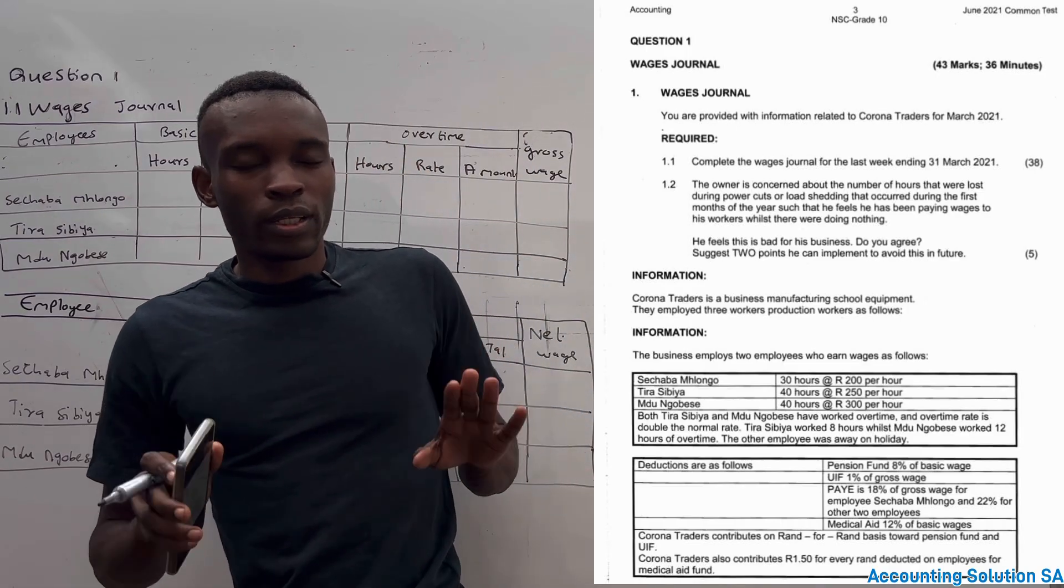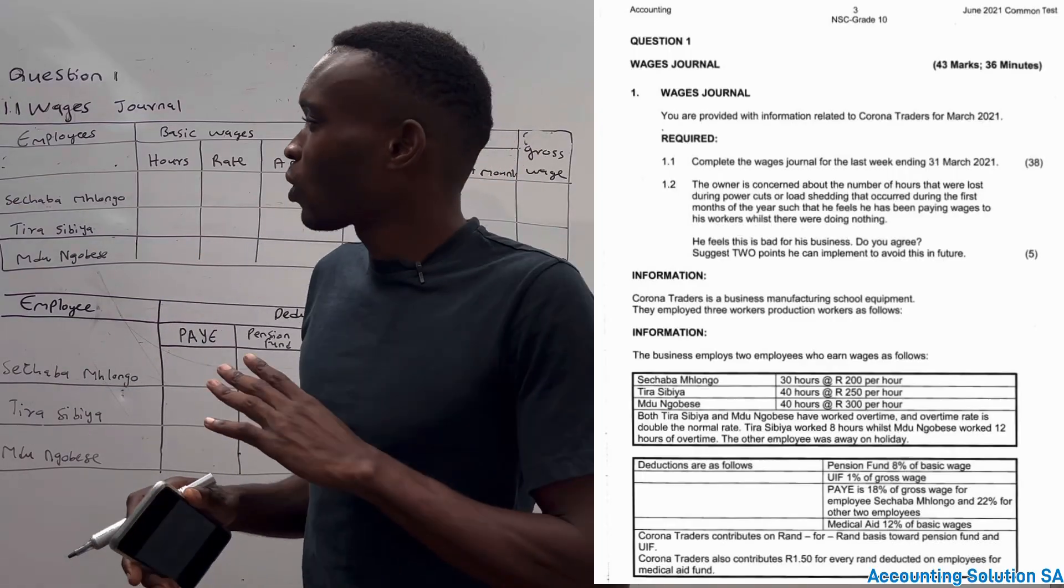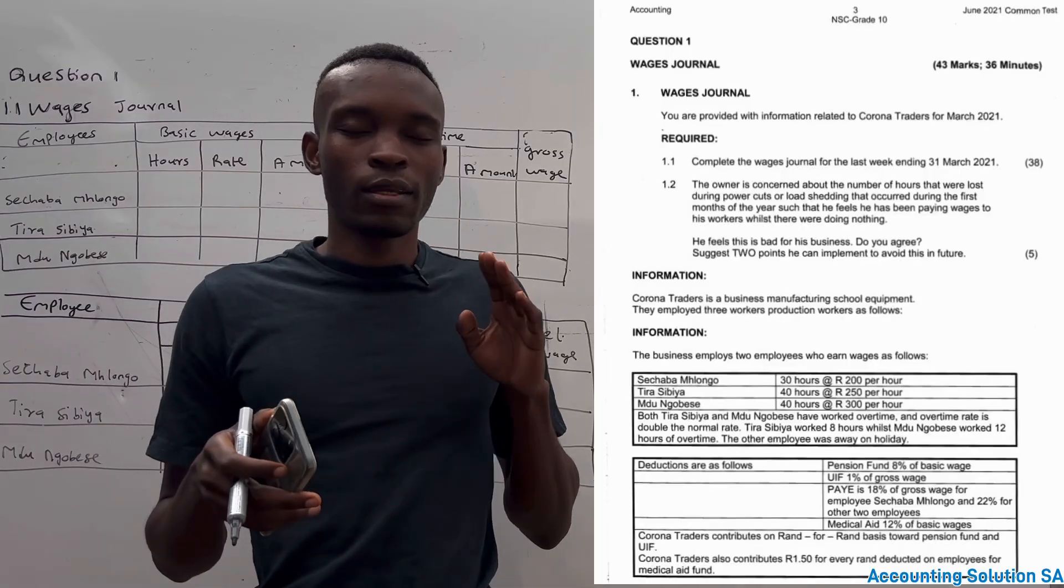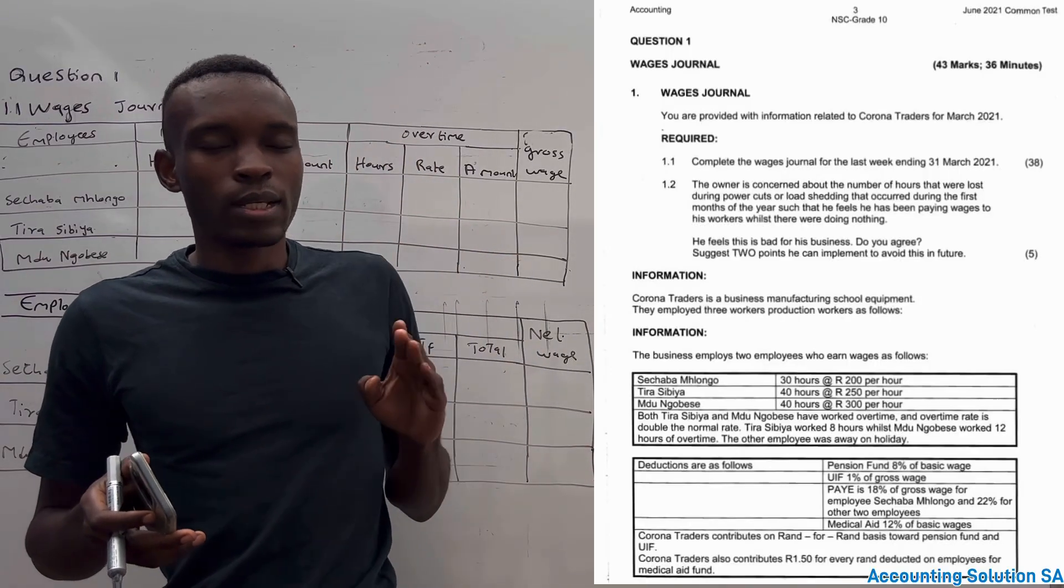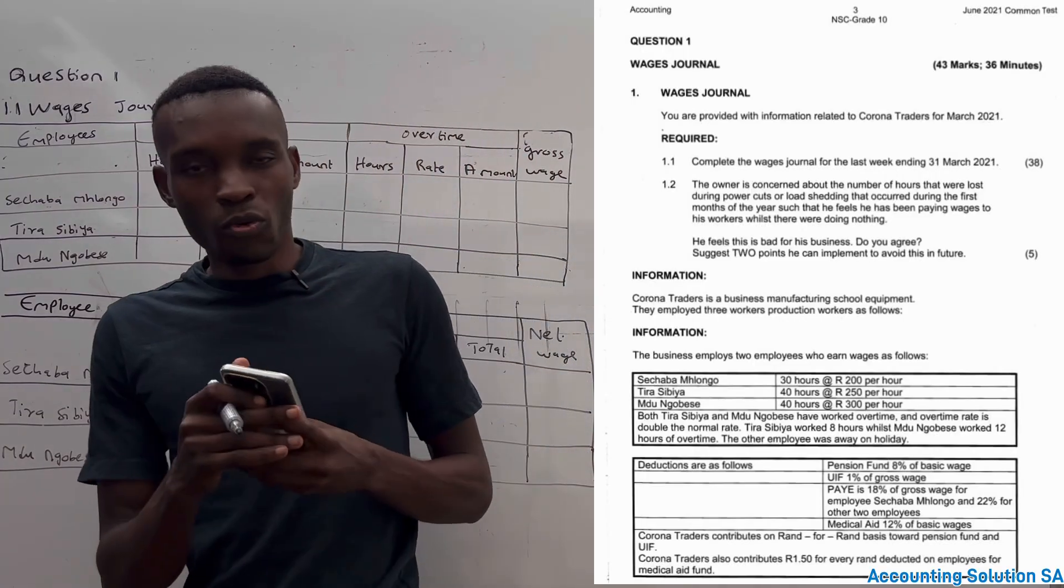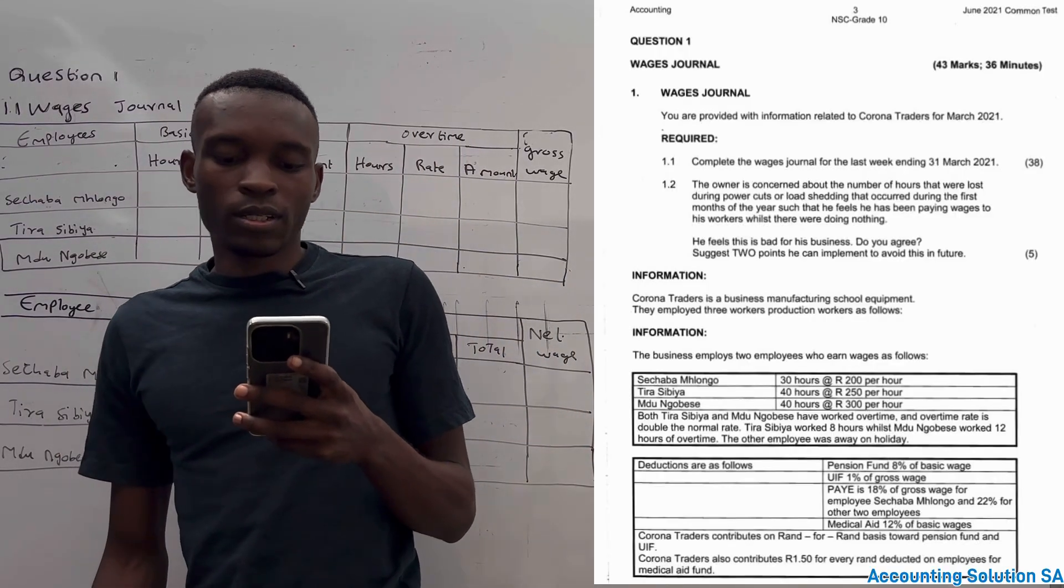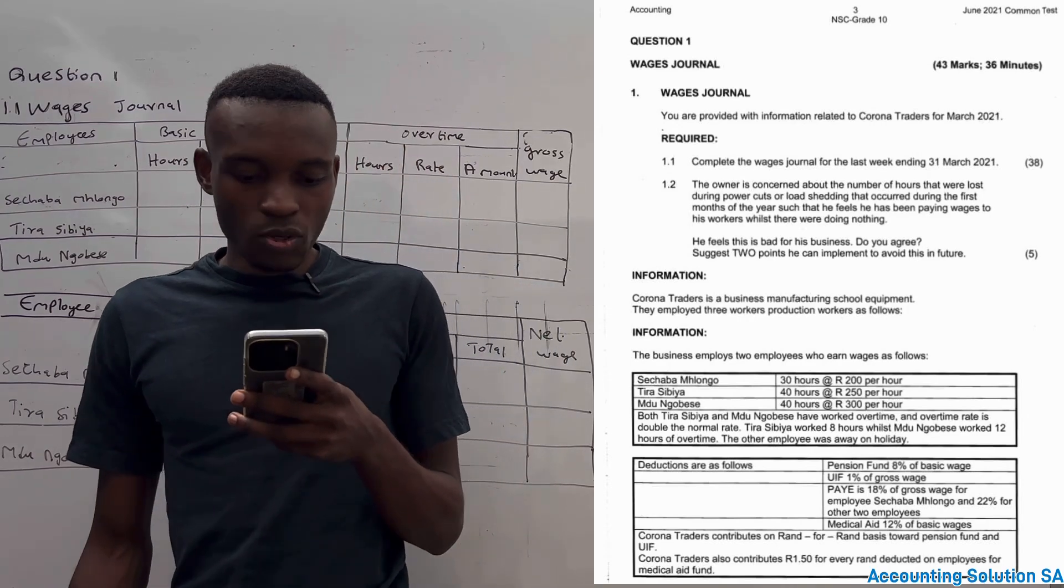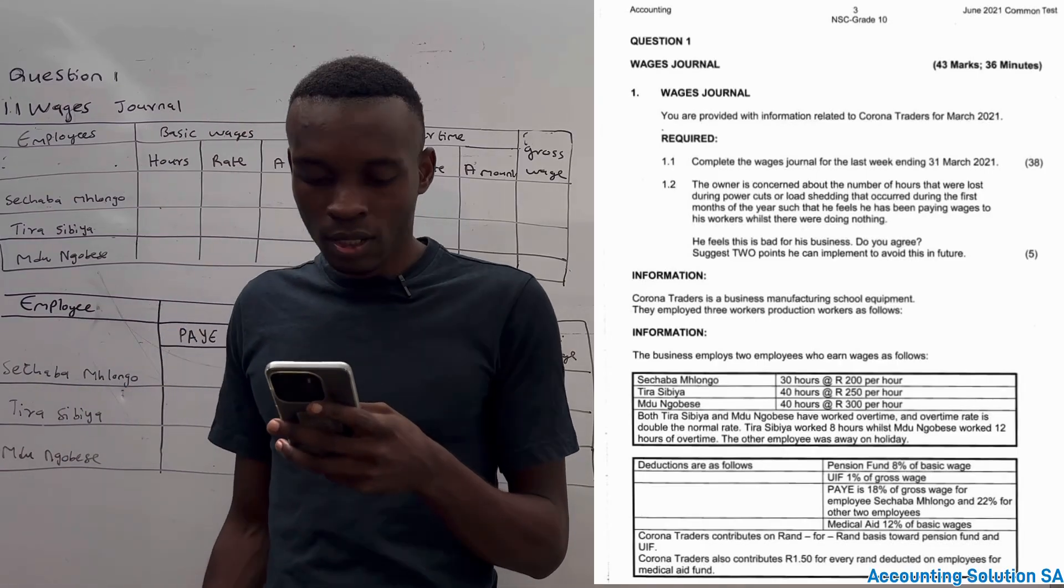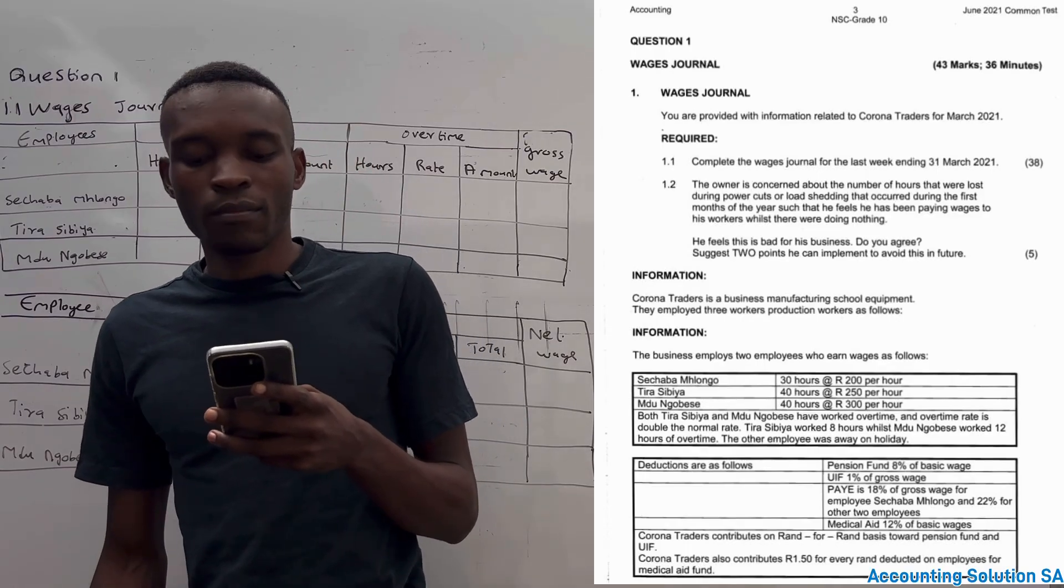Hi, great! So in this video we are going to discuss a wages journal. This question paper I did for junior examination as well as final examination papers, so make sure that you stay tuned and watch until the end so that you will learn how to calculate all these wages journal. I'm going to make it simple for you. This was question one from the June examination 2021 common test, and they said you are provided with the information related to Corona Traders for March 2021. Required: complete the wages journal for last week ending 31 March 2021.